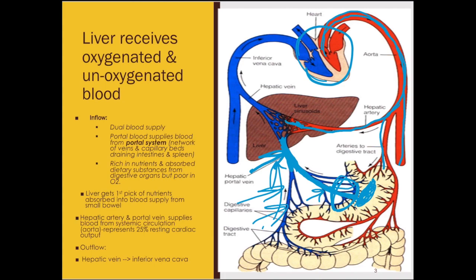Now let's talk about how blood leaves the liver. We've dropped off the oxygen and we're headed back to the right atrium through the inferior vena cava to pick up more oxygen. The blood that came from the intestines is also going to join back into the hepatic vein, which then joins up with the inferior vena cava and goes back to the heart. So the outflow is simpler — the blood leaving the liver only has one way out.